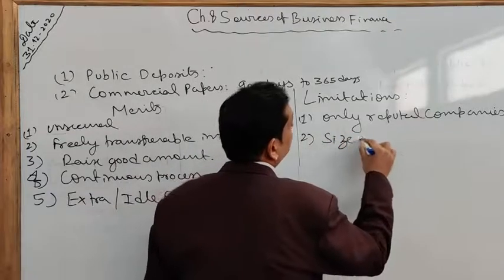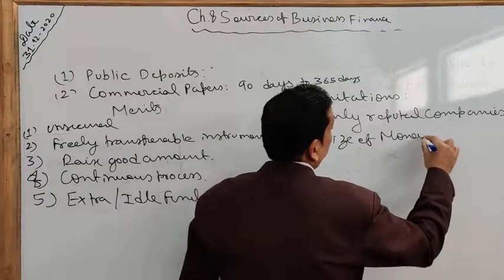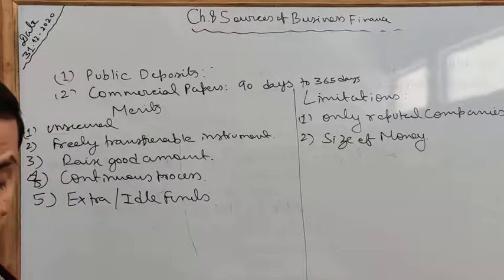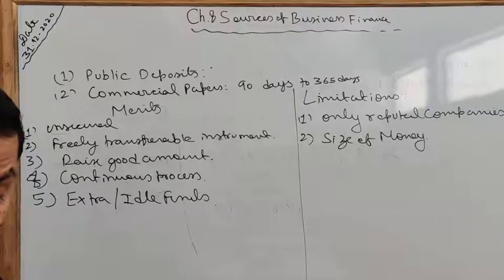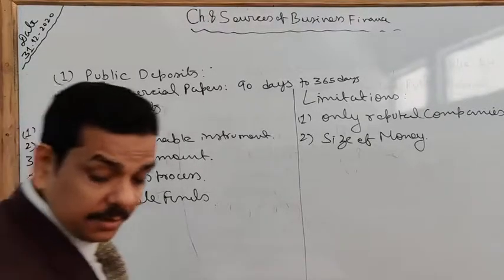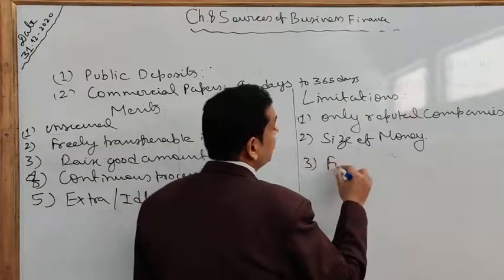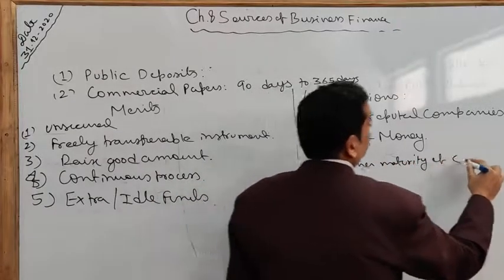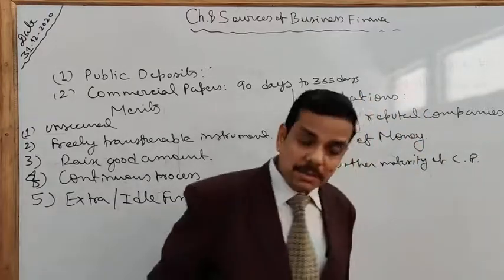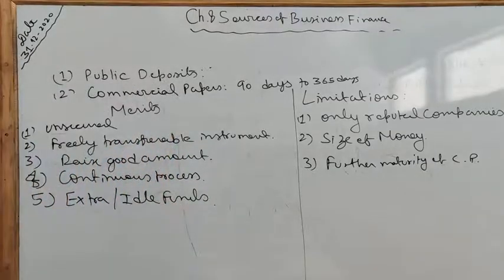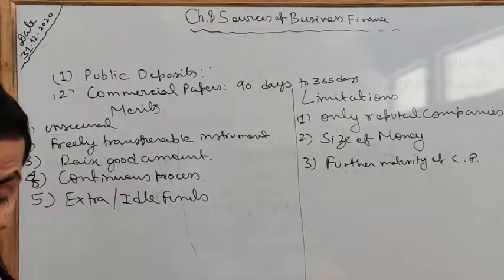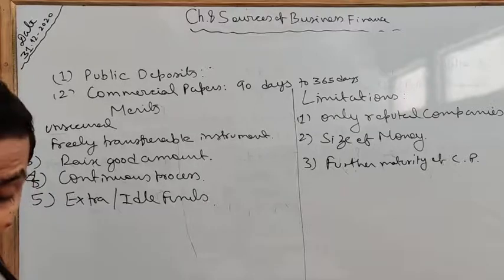Similarly, the size of the money that can be raised through commercial paper will not be very large because it depends on the excess liquidity available with the supplier of funds at a particular time. Also, extension of maturity of commercial paper is not possible — if a firm is facing financial difficulties and is not in a position to redeem its paper, extending the maturity of commercial paper is simply not possible.